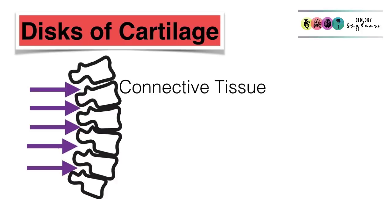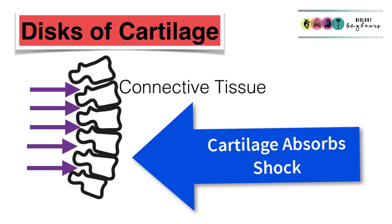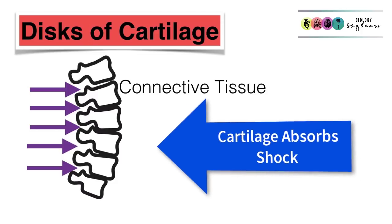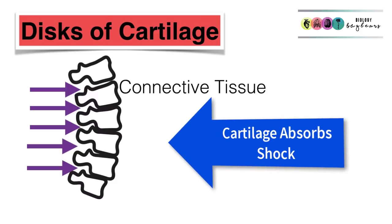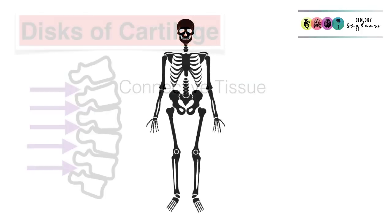Sitting in between each of those vertebrae are discs of cartilage — cartilage is a type of connective tissue. They're there to cushion the bone and to absorb shock, so they act as a shock absorber.